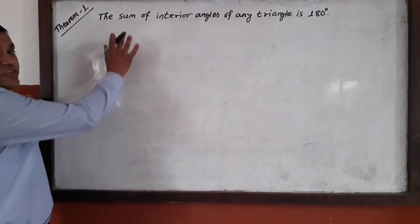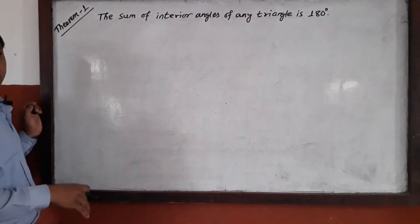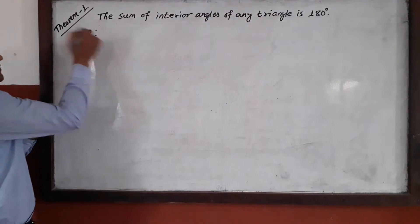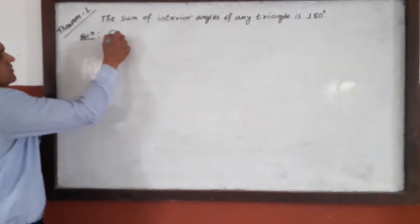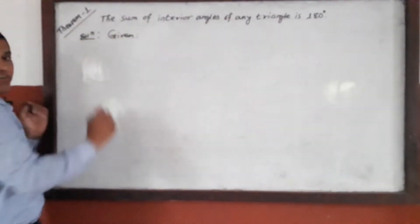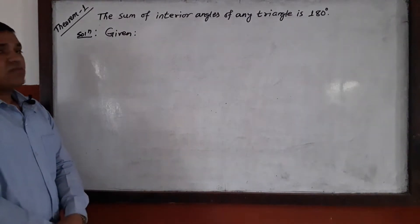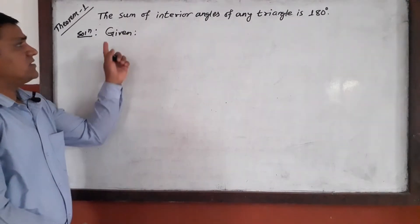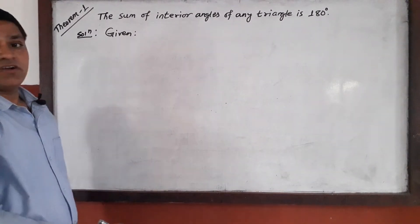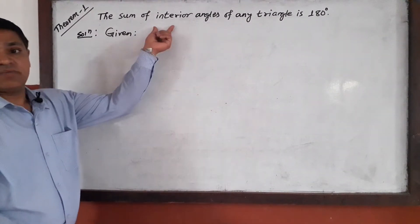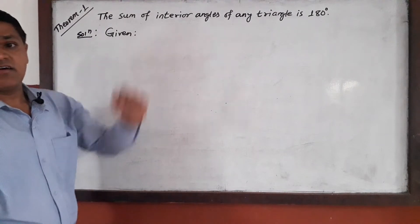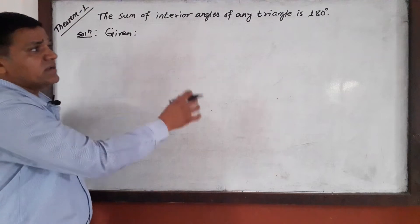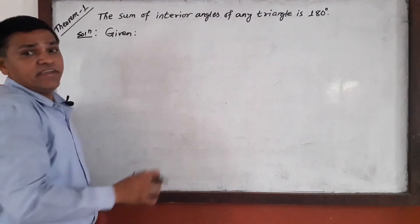First of all, to prove the theorem we need to write 'given.' The first step to prove any mathematical statement theoretically is 'given.' In given, we draw a figure according to the given statement. Here we have given a triangle with their three angles. I am going to draw a figure of a triangle.